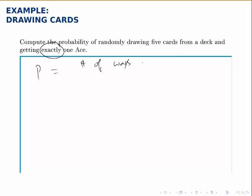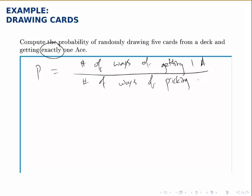So the number of ways of getting exactly one ace divided by the number of ways that we could pick five cards, the number of total possibilities for what hand we could get.